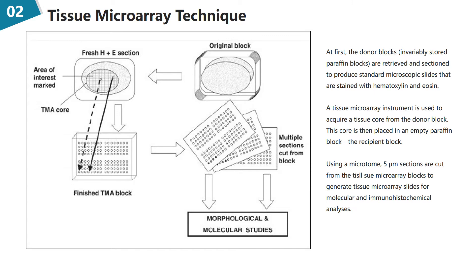A tissue microarray instrument is used to acquire a tissue core from the donor block. This core is then placed in an empty paraffin block, the recipient block. Then, using a microtome, 5 µm sections are cut from the tissue microarray blocks to generate tissue microarray slides for molecular and immunohistochemical analyses.